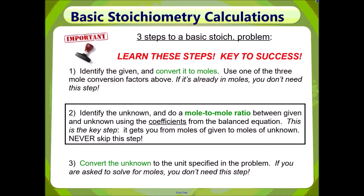Step 2: this step is absolutely required. You must identify the unknown and do a mole-to-mole ratio between the given and the unknown using the coefficients from the balanced equation. This is the key step — it gets you from moles of given to moles of unknown.